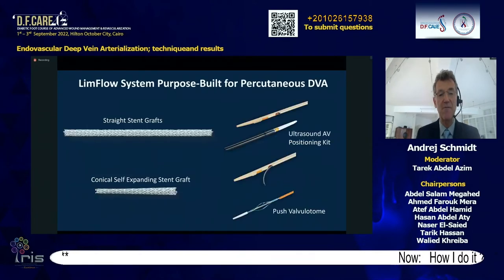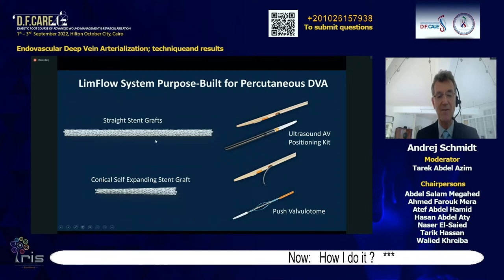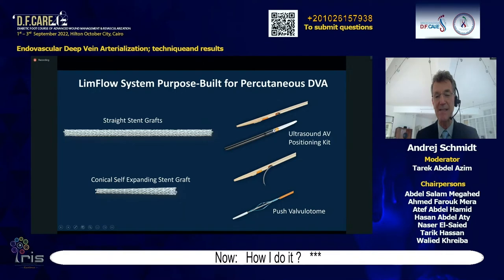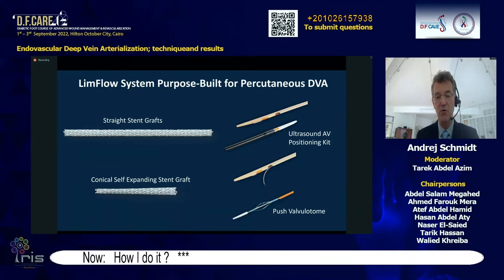LimFlow is a company that was the first to provide material to perform deep venous arterialization (DVA) purely endovascularly. They provided straight stent grafts and a conical one to cross from the artery to the vein, catheters to precisely locate the target area using ultrasound as a detector, re-entry devices, and — perhaps most importantly — a forward-looking pushable valvulotome to destroy the valves distally.